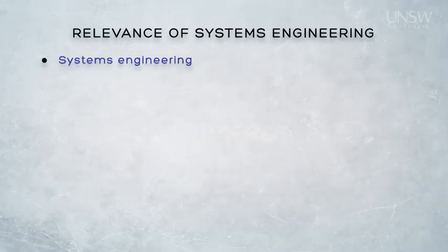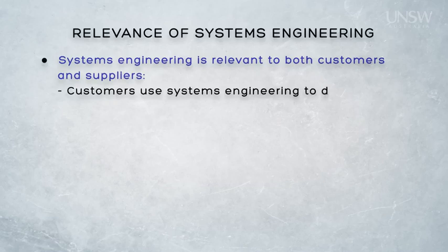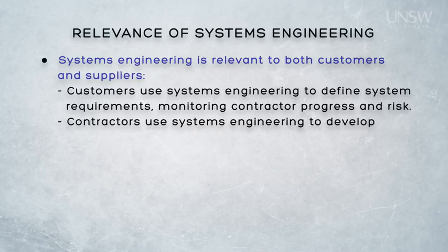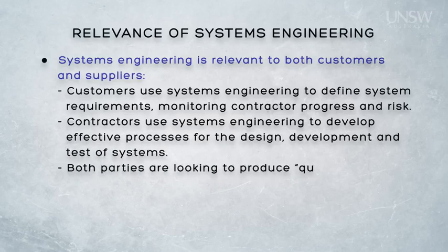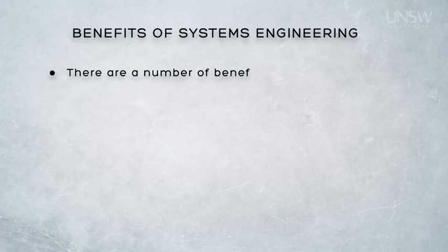Systems engineering is relevant to all parties as well as to all systems, and it's particularly relevant to both the customer and the supplier. Customers use systems engineering to define business, stakeholder, and system requirements, as well as to monitor the contractor's progress and risk. Contractors use systems engineering to develop effective processes for the design, development, and test of systems. Both parties are looking to produce quality systems while minimising their exposure to risk, and this is what systems engineering can help them with.